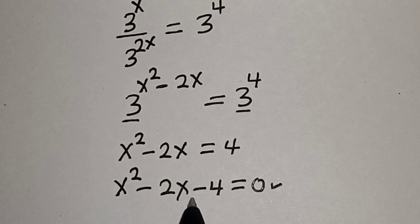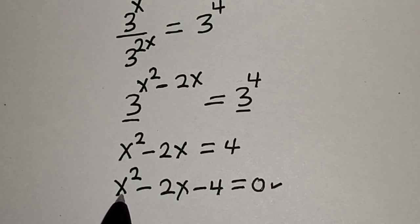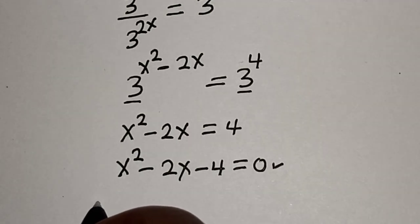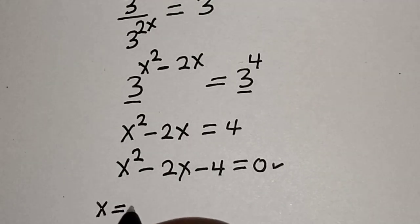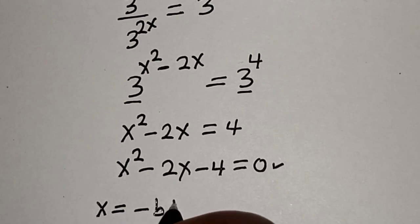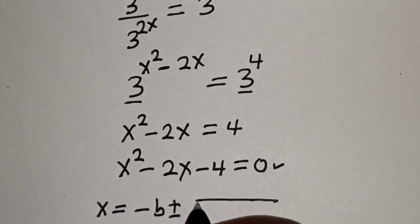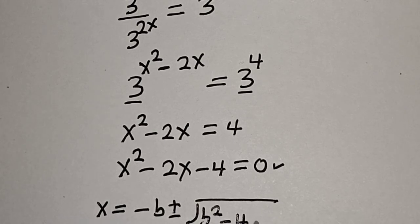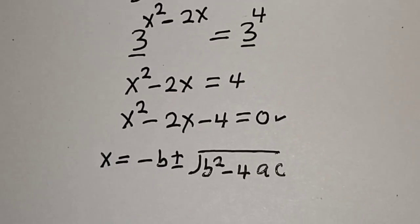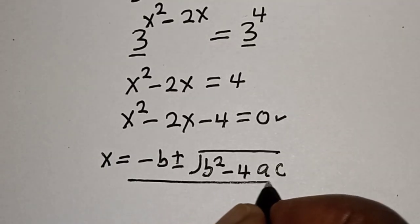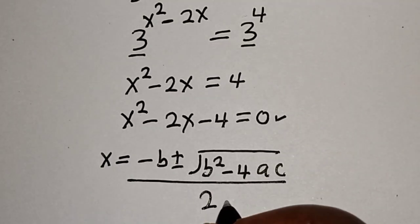This is a quadratic equation, which can be solved using the quadratic general formula. The quadratic formula gives x equal to negative b plus or minus square root of b squared minus 4ac, divided by 2a.